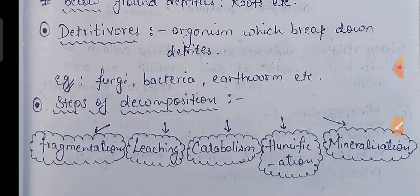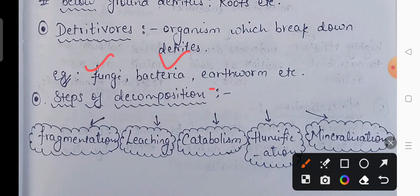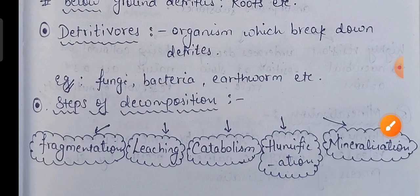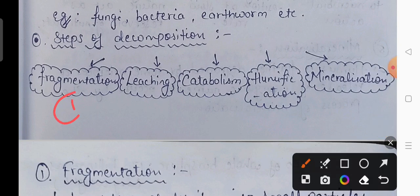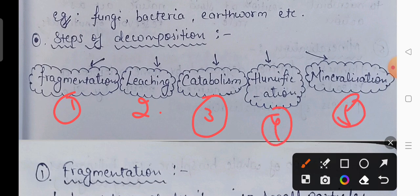The organisms which break down the detritus are known as detrivores. For example, earthworms, fungi, bacteria, etc. Now what are the various steps of decomposition? There are five stages: fragmentation, leaching, catabolism, humification, and mineralization. Through these 5 sequential steps, the complex organic material (detritus) breaks down into simple inorganic form.